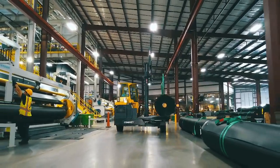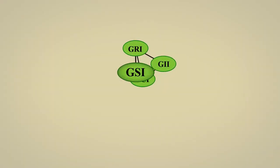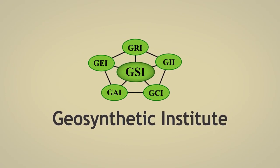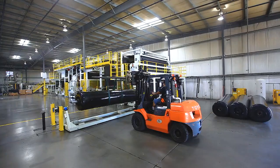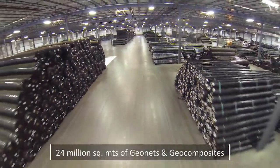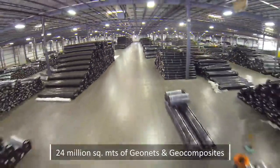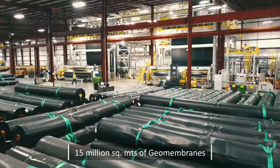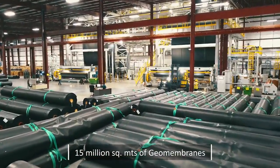All products meet the stringent norms established by industry certification and government regulators. Today our annual production exceeds 24 million square meters of geonets and geocomposites and 15 million square meters of geomembranes.